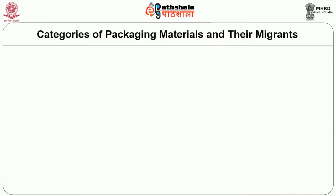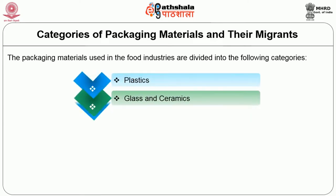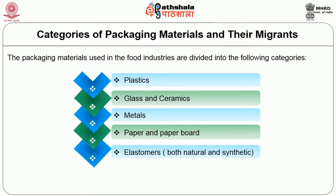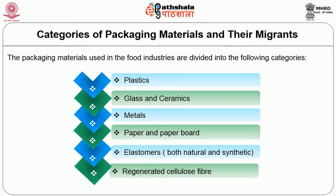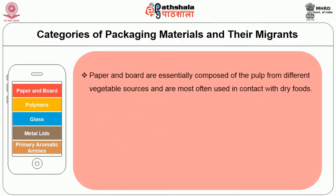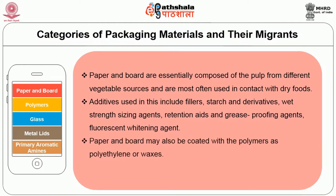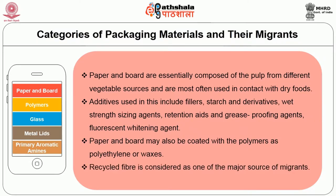Let us move to the different categories of packaging materials and their migrants. The packaging materials used in food industries are divided into the following categories: plastics, glass and ceramics, metals, paper and paperboard, elastomers (both natural and synthetic), and regenerated cellulose fiber. First, we will discuss paper and paperboard. These are essentially composed of pulp from different vegetable sources and are most often used in contact with dry foods. Additives used include fillers, starch and derivatives, wet strength sizing agents, retention aids, grease-proofing agents, and fluorescent whitening agents. Paper and board may also be coated with polymers such as polyethylene and waxes. Recycled fiber is considered one of the major sources of migrants.